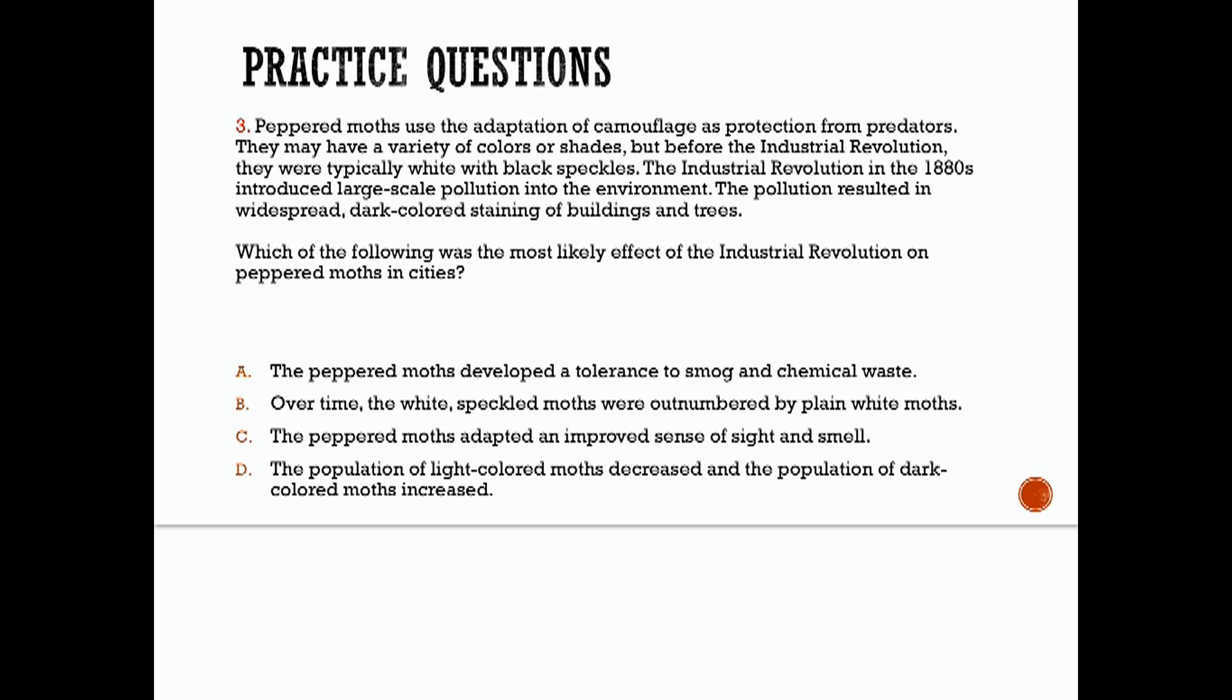Look these over and see what you think. After the Industrial Revolution began, the pollution began staining the buildings and trees in this dark, blackish color. While on these dark surfaces, the light-colored peppered moths were much more visible to predators than before. On the other hand, the rare, the dark-colored peppered moths now had a new advantage. They were camouflaged well with these dark surfaces. They were less visible to predators. The most likely effect of this in cities was that the population of light-colored moths decreased, and the population of dark-colored moths increased. That is D.